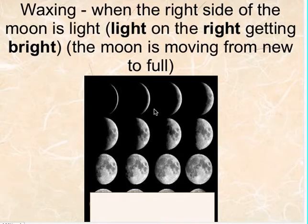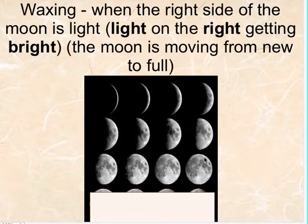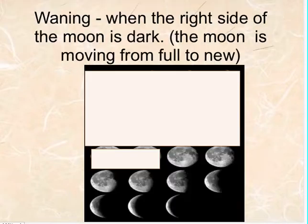Moon vocab: we left off with waxing. When the right side of the moon is light, these are all waxing moons. But we're going to keep going because we've got a few more to cover.